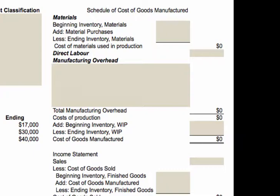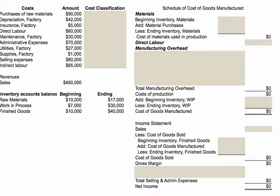I've already set up the schedule of cost of goods manufactured so that you'll see the three product costs — materials, labor, and overhead — set up just like you'd see them in a typical schedule, followed by the reconciliation at the bottom with beginning work in progress, adding ending work in progress, equaling the cost of goods manufactured. That's followed by the income statement: sales minus cost of goods sold gives you gross margin, and gross margin less selling and admin expenses gives you net income. So let's walk through and solve this.